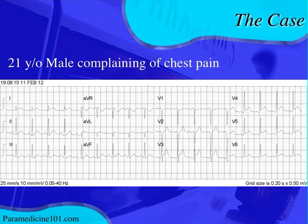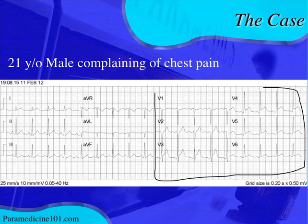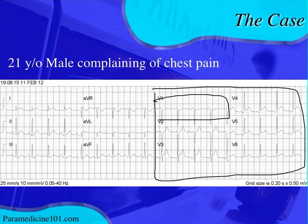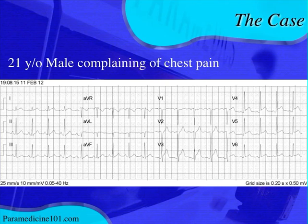Now we're going to start looking at the precordial axis, which looks to be normal as well. You have a normal R-wave progression or transition — you go from almost no R wave in V1, it's all negative, and then in V6 it's almost all positive. That's the way it should be, and your transition should occur between V3 and V4, which it does. So far everything looks normal.